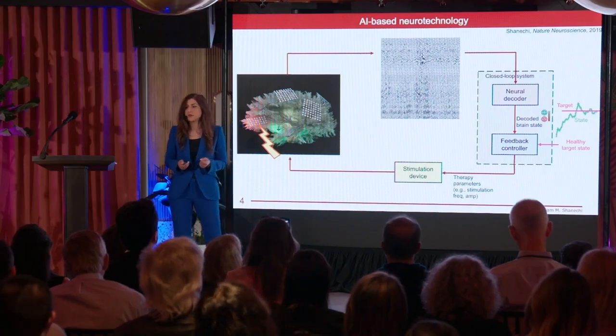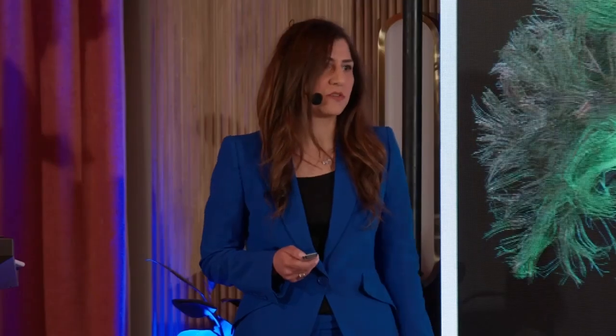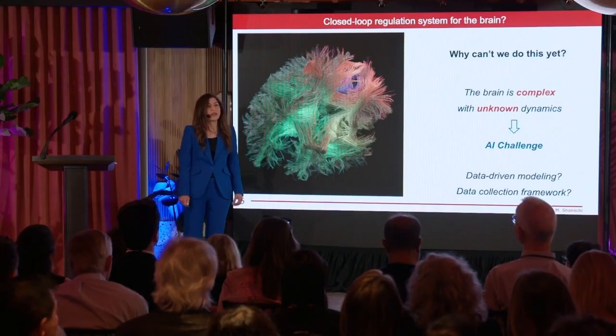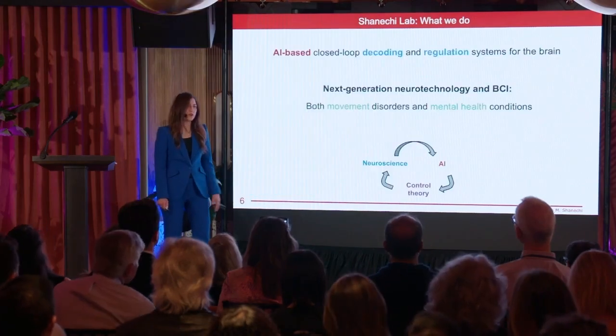This is an example of a closed-loop control system. As engineers, you're actually very good at designing these systems — think about autopilots. So you may ask, why is it that we still cannot do this for the brain? The issue is that unlike an engineering system, we did not design the brain. It's an immensely complex system of over 80 billion neurons with unknown dynamics. That introduces a huge AI challenge to build data-driven models of this complex system and come up with data collection frameworks that can enable this modeling.